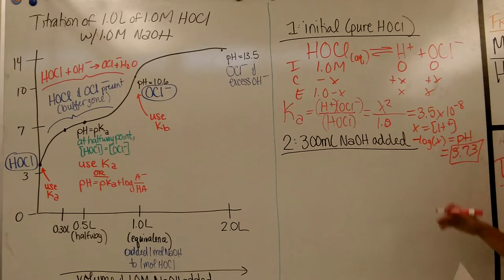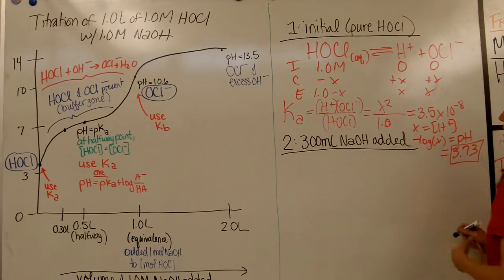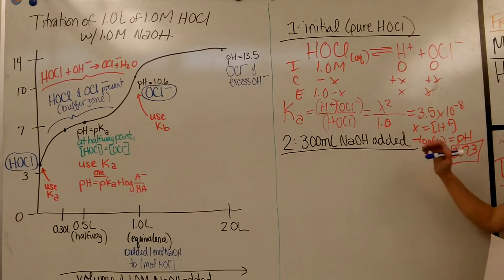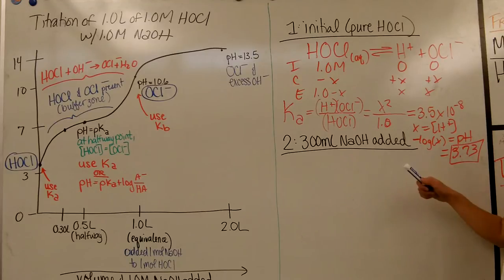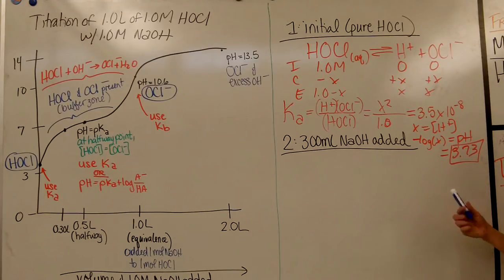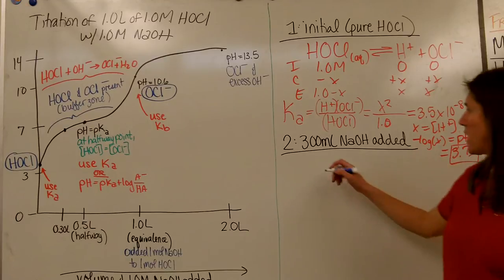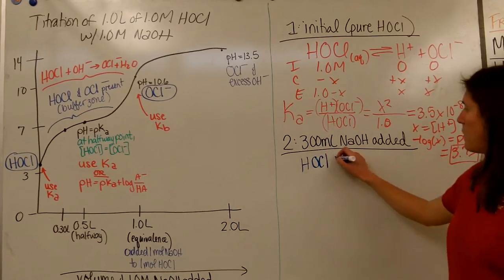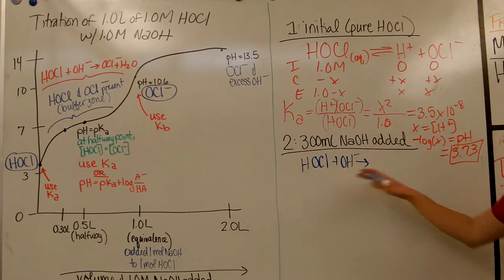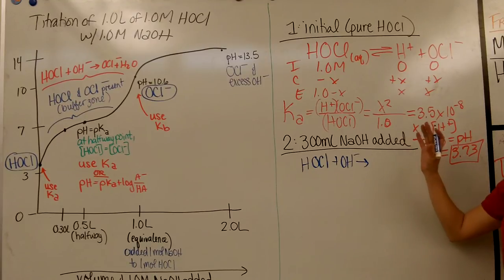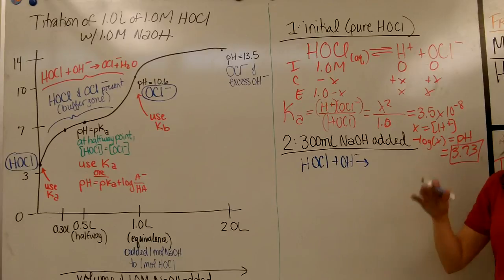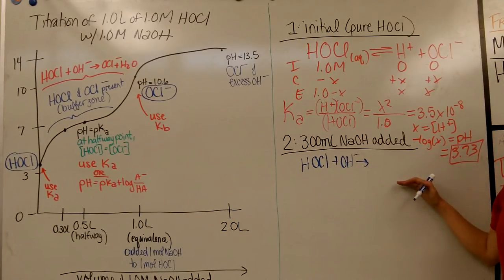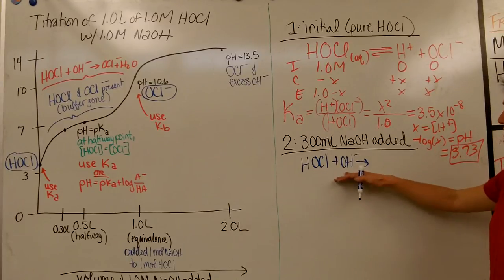That's step 1 — the initial pure weak acid case. The next scenario is when you have added some of your strong base but you're not at equivalence yet. We started out with 1 liter of 1 molar HOCl, so we had 1 mole of our weak acid. Now at this point, we've added 300 mL of 1 molar NaOH, so we've added 0.3 moles of my strong base. If I write out this reaction — HOCl plus hydroxide ions — I'm going to draw this as a one-way arrow, because adding a strong base to a weak acid is essentially a one-way reaction.